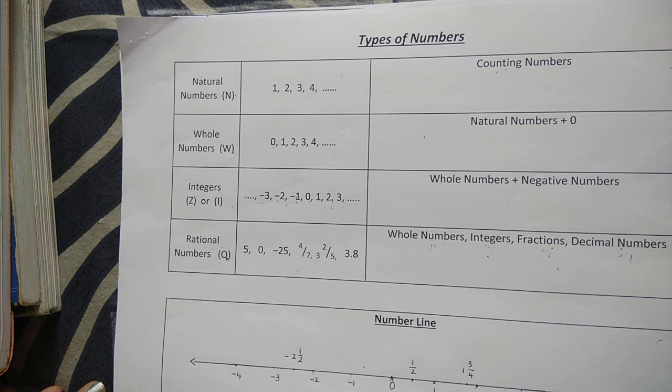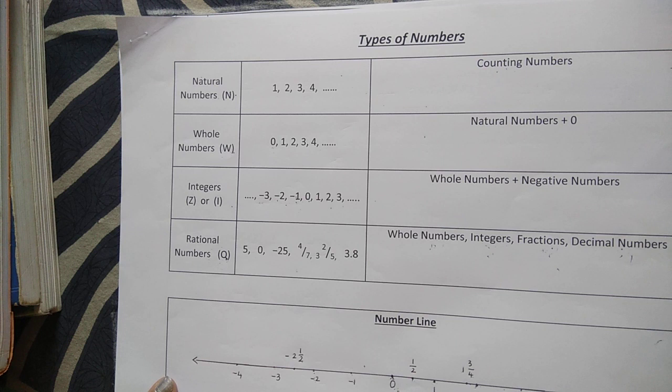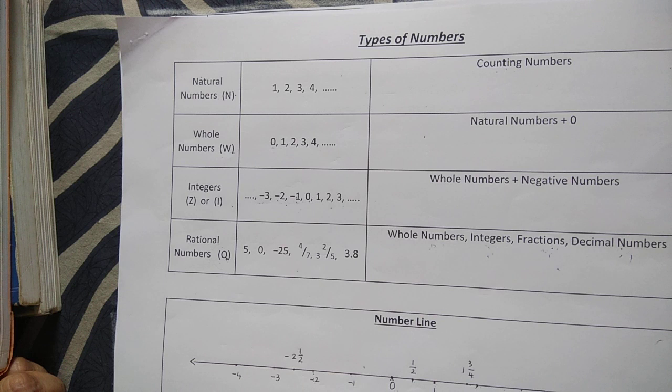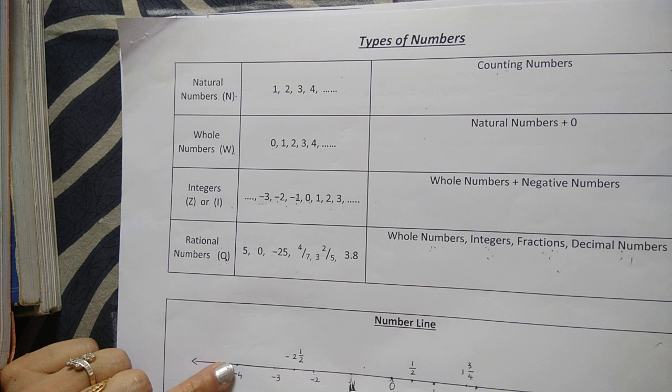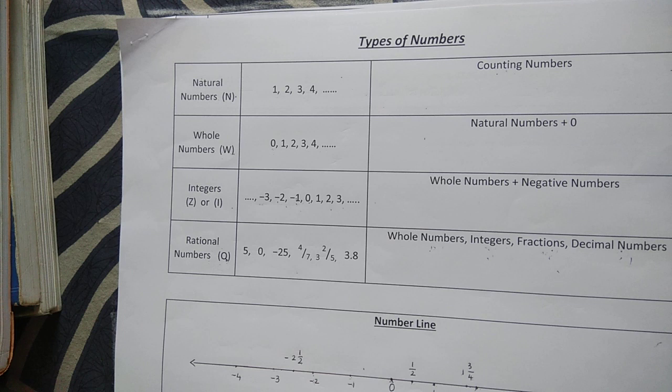Now you can see the number line here on which I have marked some numbers. This is 0; on the right side we can see positive integers and on the left side we see negative integers. Suppose I ask you: how many integers are there between 1 and 5? The answer is there are 3 integers: 2, 3, and 4. In the same way, how many integers are there between minus 1 and minus 4? There are 2 integers: minus 2 and minus 3.